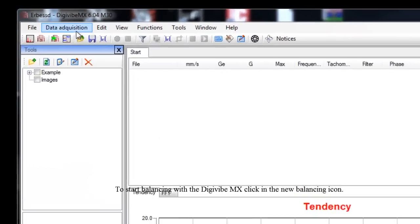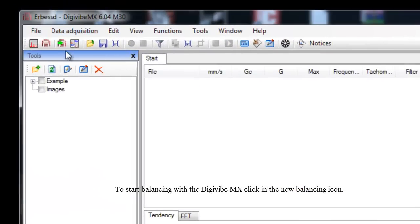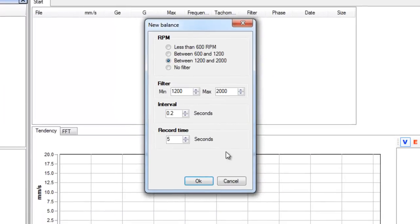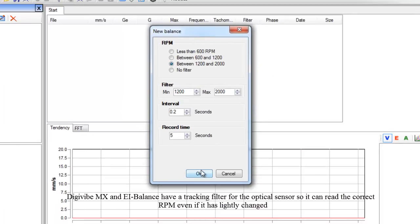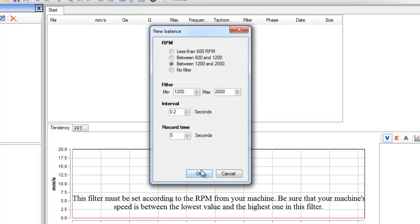To start balancing with the DigiVibe MX, click in the New Balancing icon. DigiVibe MX and EI Balance have a tracking filter for the optical sensor, so it can read the correct RPM even if it has lightly changed. This filter must be set according to the RPM from your machine. Be sure that your machine's speed is between the lowest value and the highest one in this filter.